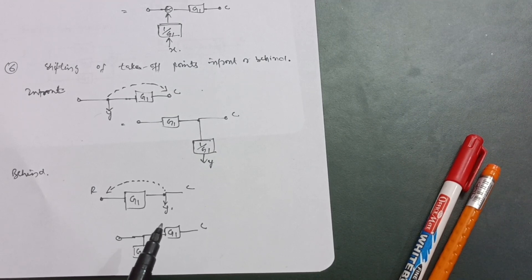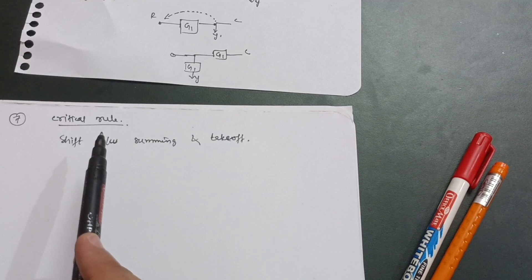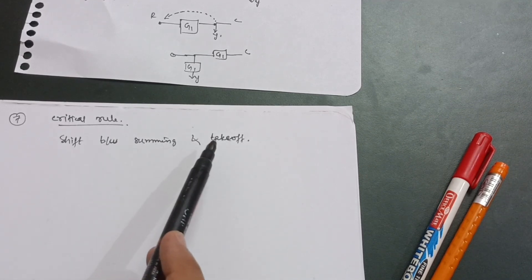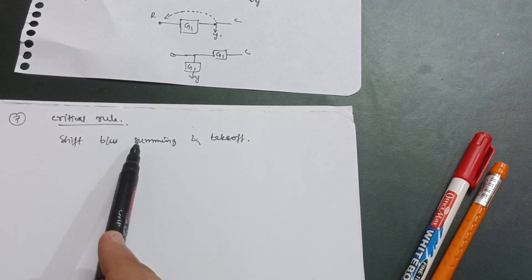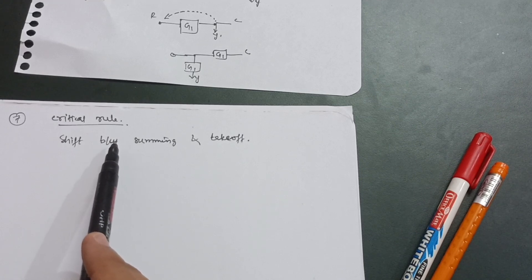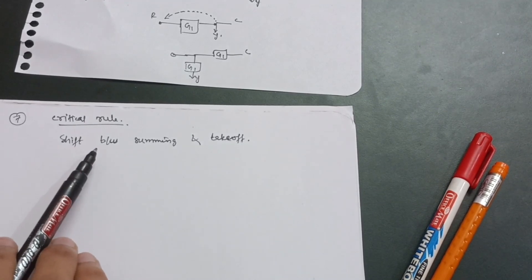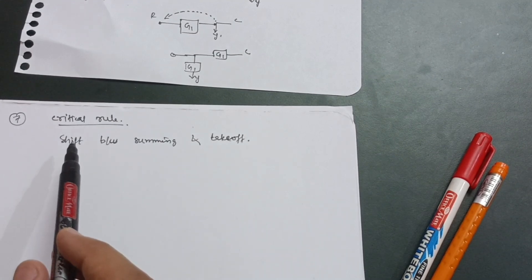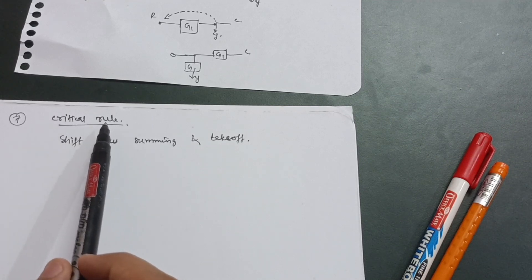The seventh rule is the critical rule — the last but not least. You have to interchange summing and takeoff points. This rule is applicable only if there is no other option in the problem — only then can you use this critical rule. The rest of the problems you can easily solve with the six rules already discussed.